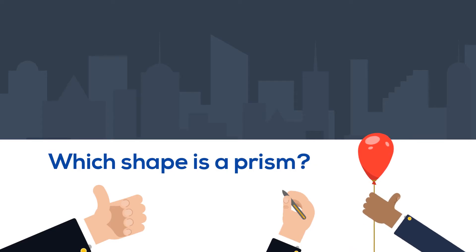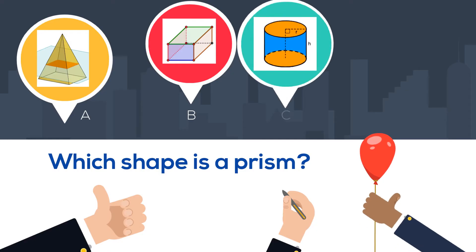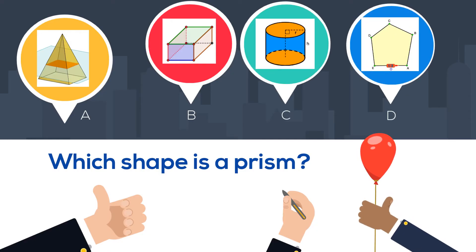Which of the following shapes is a prism? Is it A, B, C, or D? And we'll answer at the end of the video.